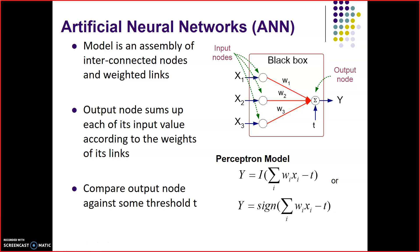This is the graph of artificial neural networks at the input side of a single stage. A model is an assembly of interconnected nodes and weighted links. Here the model shows interconnected nodes connected to each other. These are called input nodes, and this is a black box. Output nodes sum up each of their input values according to the weights of their links: y is equal to sigma wi into xi. The output is compared against some threshold t, minus t.